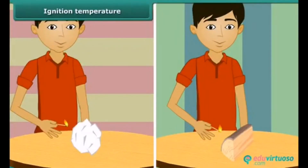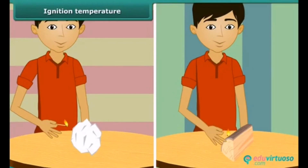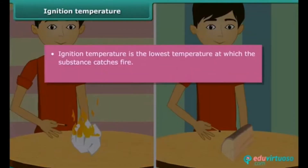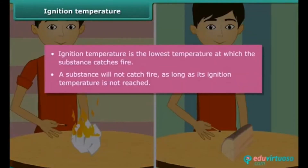We just saw that paper burns when lighted with a matchstick. Now bring the matchstick close to a piece of wood. The piece of wood does not catch fire — one lighted matchstick is not able to burn it, but a piece of paper burned quickly. This is because the piece of wood has not reached its ignition temperature. Ignition temperature is the lowest temperature at which a substance catches fire.